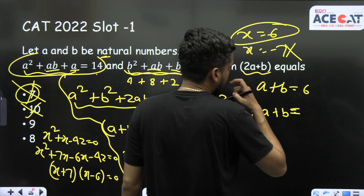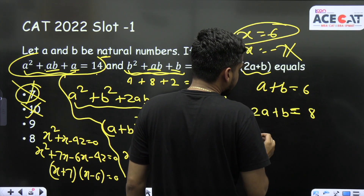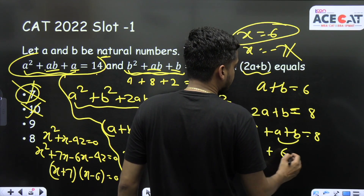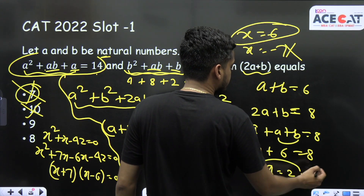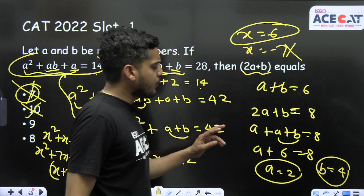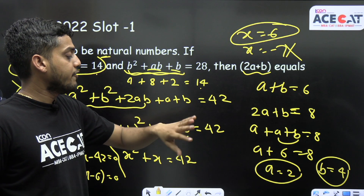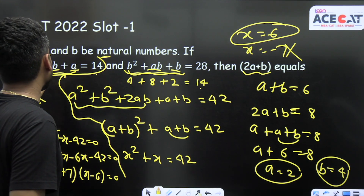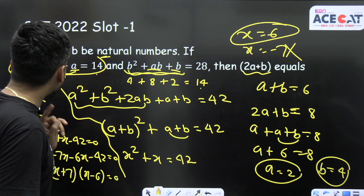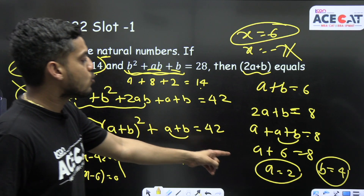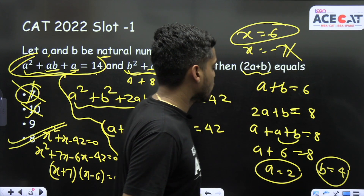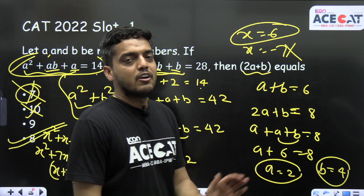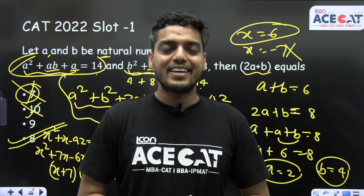Let's check option D: 2a + b = 8. Then a + (a + b) = 8, and since a + b = 6, a = 2 and b = 4. Checking: 2² + 2×4 + 2 = 4 + 8 + 2 = 14 ✓, and 4² + 2×4 + 4 = 16 + 8 + 4 = 28 ✓. Both conditions are satisfied, so option D is the correct answer: 2a + b = 8. I hope this is crystal clear. We'll meet in the next class with more questions.